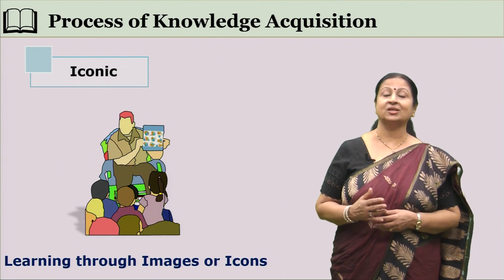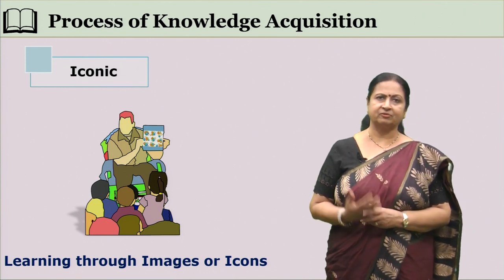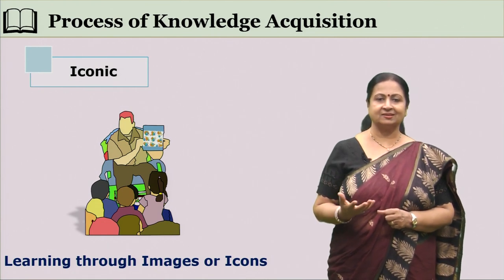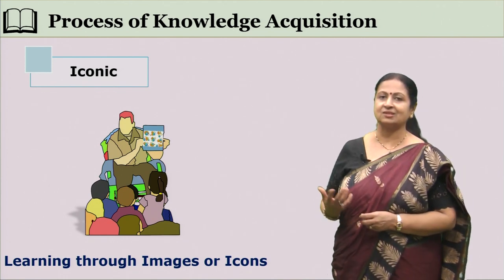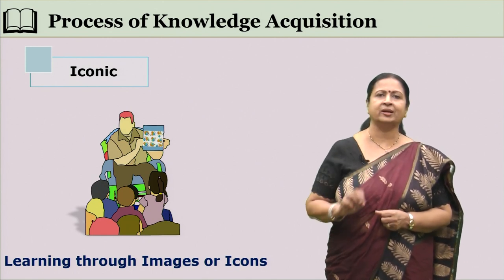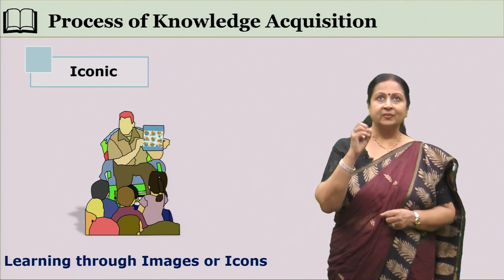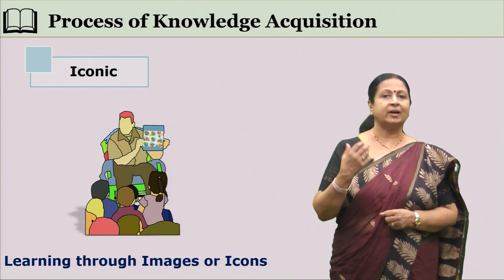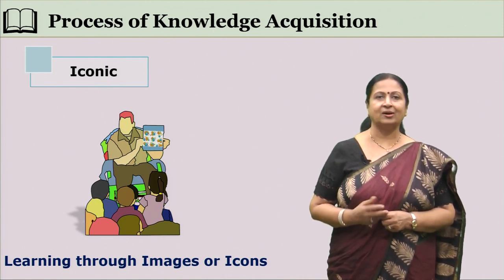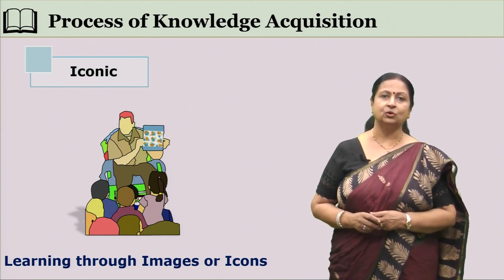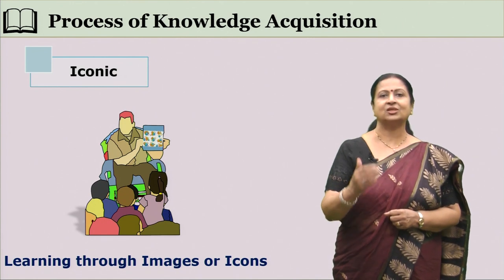While the first step is enactive, the child explores a particular situation and manipulates it. For example, a child pulls out various plants, goes near a tree, realizes it cannot be pulled out, and finds that plant stems are soft whereas tree trunks are hard. The child acquires knowledge by acting upon the situation. The next step is getting more information by observing movies, videos, and pictures of that particular phenomenon — this is called the iconic stage.